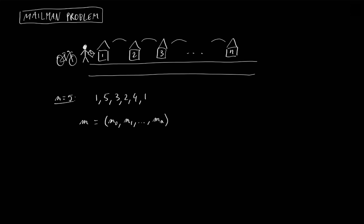The mailman has to start with house number one, so m0 is equal to one. And he ends at house number one, so mn is also equal to one. All the numbers in between will be all the remaining n-1 houses. We are also going to define the length of a path as the total distance walked by the mailman. We can write this total distance as the sum from k equal 1 to n of the absolute value of mk minus mk-1.